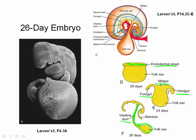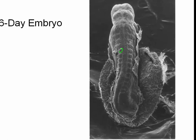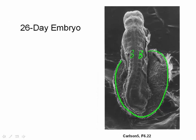Both the yolk sac and its connection to the midgut via the vitelline duct are visible in the EM image of the embryo. By the end of the folding process, the once flat trilaminar embryo has transformed itself into a three-dimensional cylinder. The somites are clearly visible on the dorsal side of the embryo, and the yolk sac is also visible, though its attachment to the anterior abdominal wall is hidden.